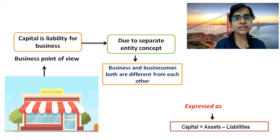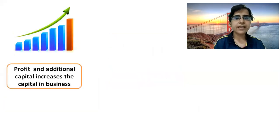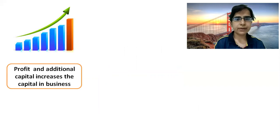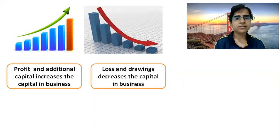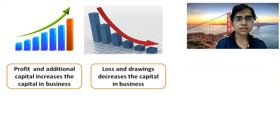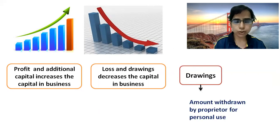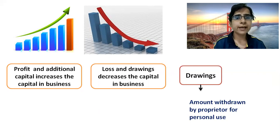Capital equals assets minus liabilities. Profit and additional capital increase the capital. If a businessman makes additional investment during the year, it is known as additional capital. Similarly, loss and drawings decrease the capital. Drawings is an amount withdrawn by the proprietor for personal use.